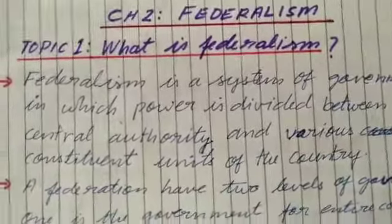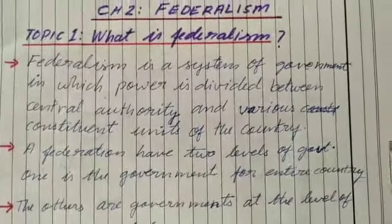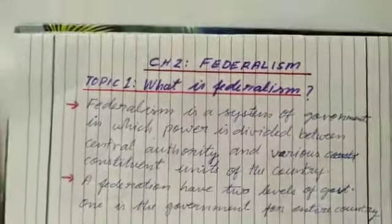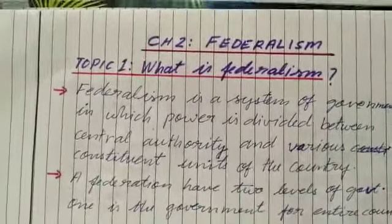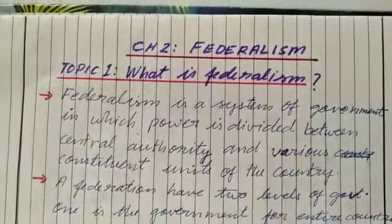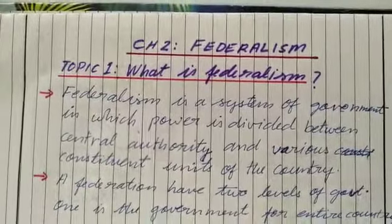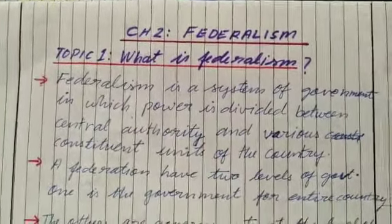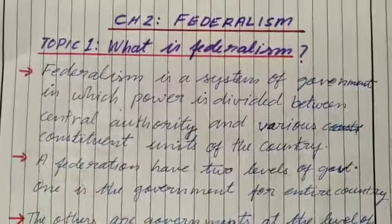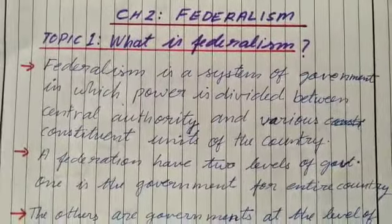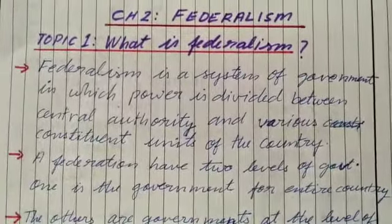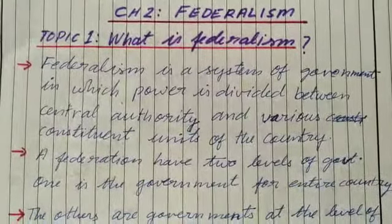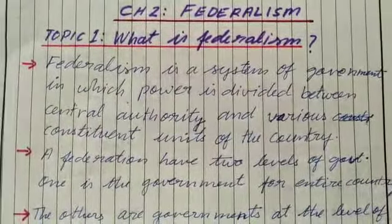Now here, in this second chapter, we are going to focus on this vertical division of power only. Now what is federalism or a federal system of government? Federalism is a system of government in which power is divided between the central and various constituent units of the country.